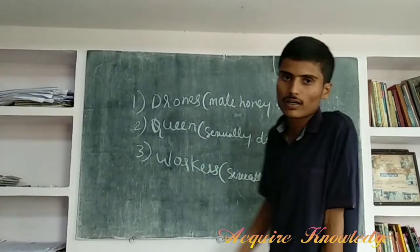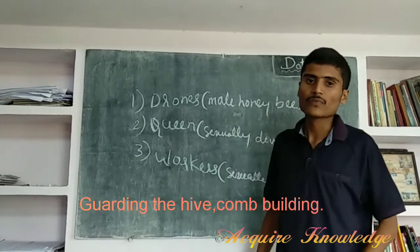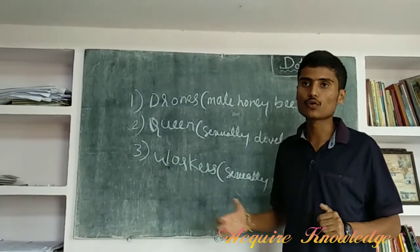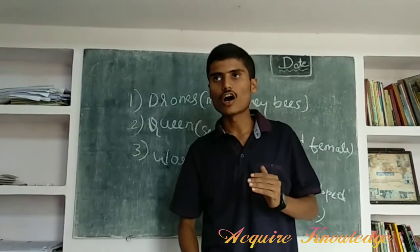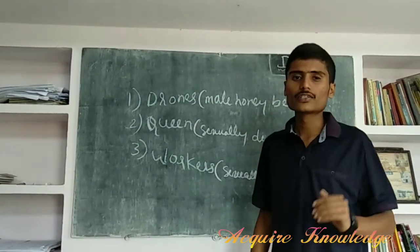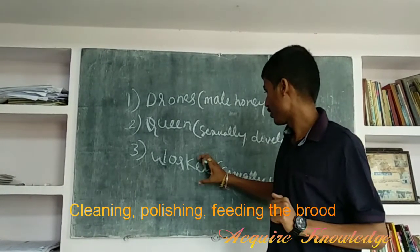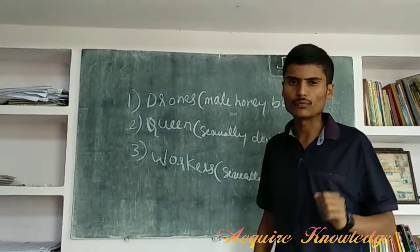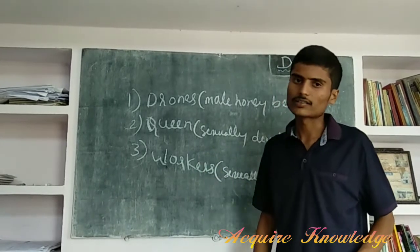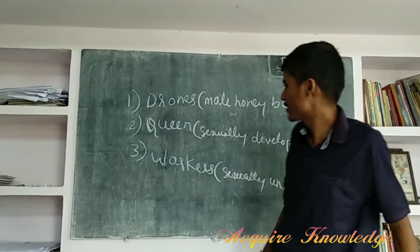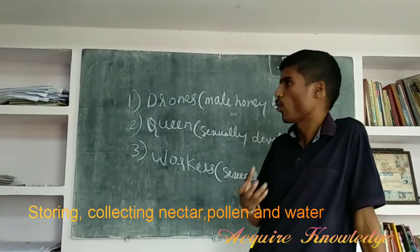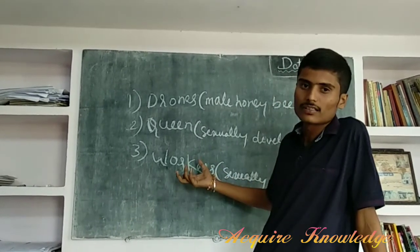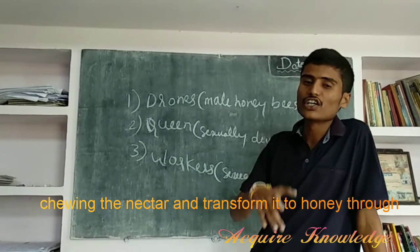Now, what is the work of the workers? Workers are responsible for guarding and protecting the queen and the hive. They help to build and construct the nest or comb. Workers also do cleaning, refreshing, and feeding the brood. They collect nectar and water. After collecting the nectar, the workers convert it into honey.